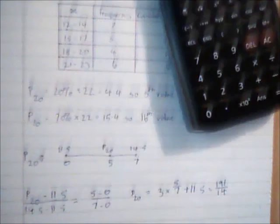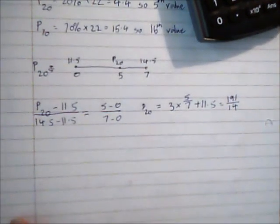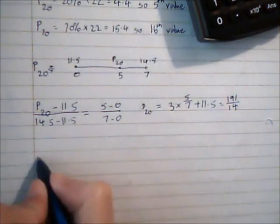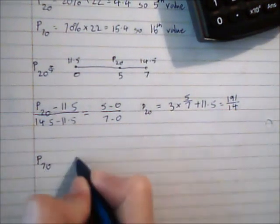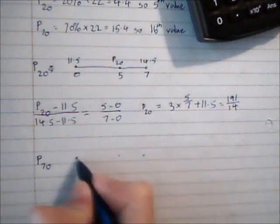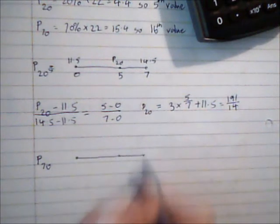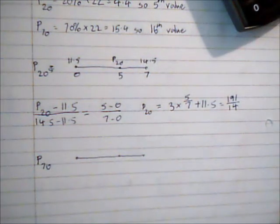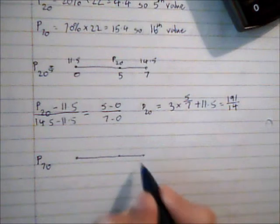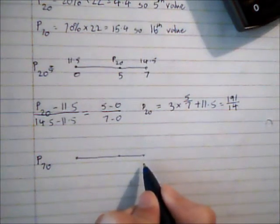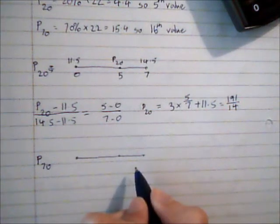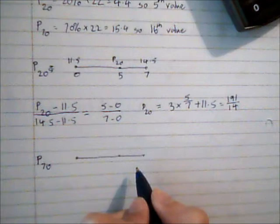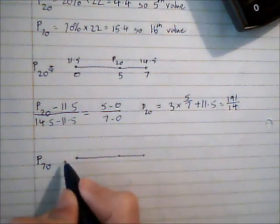And I am going to repeat the process in exactly the same way for P70. So for P70, that had a value of 16, so that is actually right at the end of one category. So that is actually quite easy. I can avoid doing this because it is exactly at the end of the group. So that means that we take P70 as 20.5.